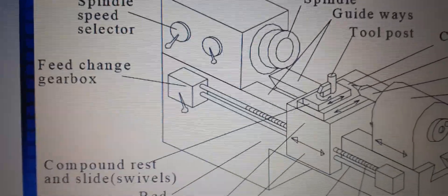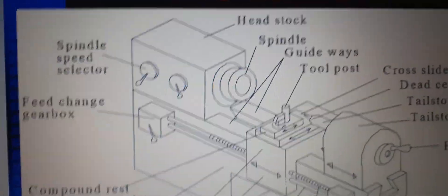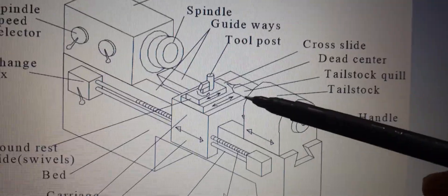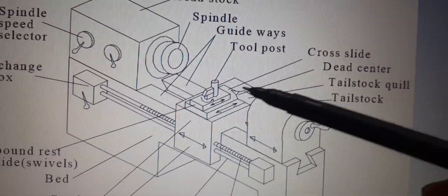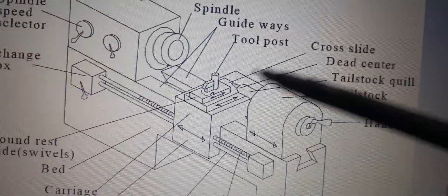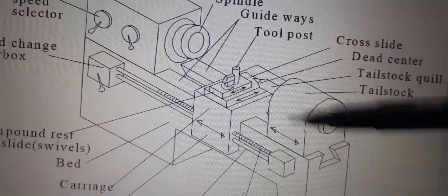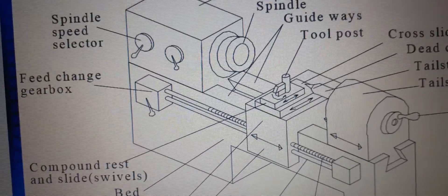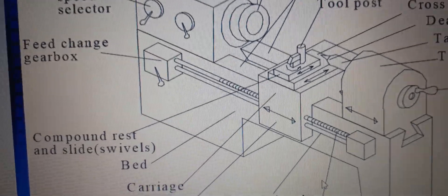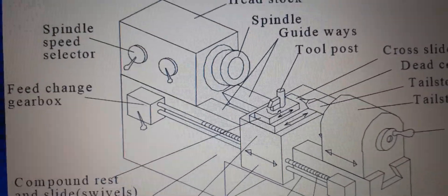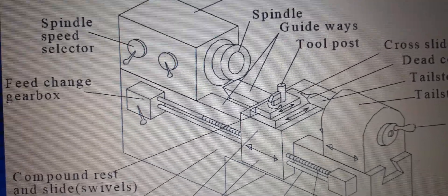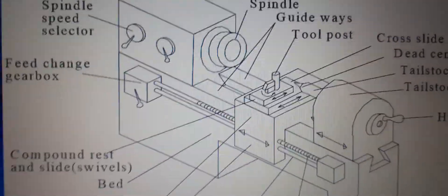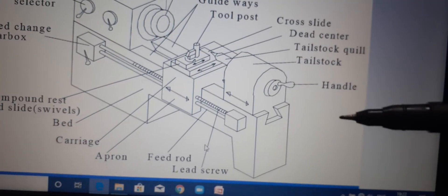The tailstock, which you can see in the figure, is located at the right end of the bed and provides support for the rotating job. The tailstock can slide along the bed on its guideways to support the job at the required distance.